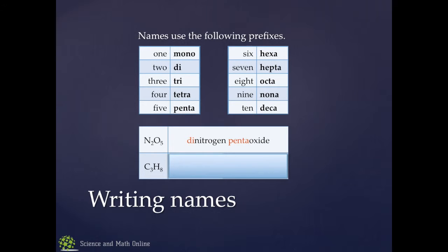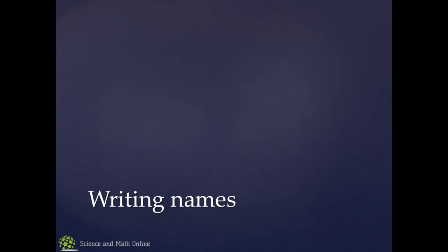Looking at the second example there, C3H8. I've got three carbons, and the prefix for three is tri, so tricarbon. Then I have eight hydrogens, so octahydride. And that's how we get our names. Now, there are a couple of rules that go with this.